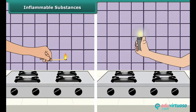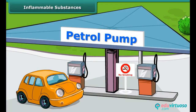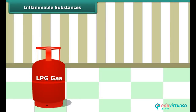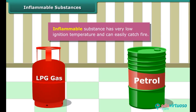Your mother would have told you to keep a burning matchstick or lighter away from the LPG gas stove in the kitchen, because LPG catches fire very easily. Similarly, you must have seen a no-smoking sign board at petrol pumps, because petrol also catches fire very easily. Substances like LPG and petrol are inflammable because they have a low ignition temperature, due to which they readily catch fire.